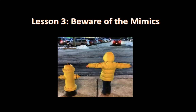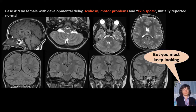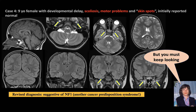Lesson three: you need to be aware of mimics. Look at this case — a young female with developmental delay, scoliosis, motor problems, and skin spots. Initially reported normal, but then we had another look. As Mick Jagger told us, you need to keep looking. Look at this thickening of the nerves — V2, V3. The trigeminal branches are thickened. So you have skin spots, scoliosis, and thickening of the nerves. We thought: this must be neurofibromatosis type 1.